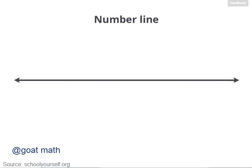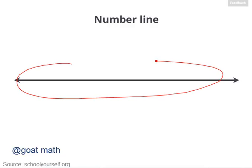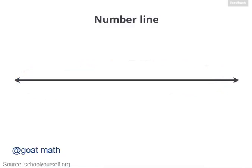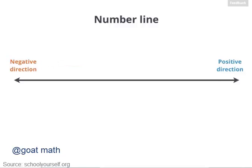The number line is, as its name suggests, a line with a lot of numbers on it. Actually, it has every number on it. It's usually drawn as a horizontal line, and you can move along it in two directions: to the right, known as the positive direction, where the numbers get bigger, and to the left, known as the negative direction, where the numbers get smaller.